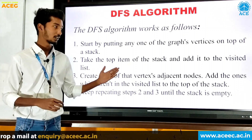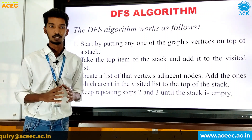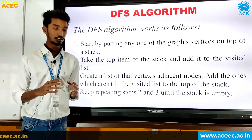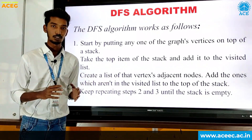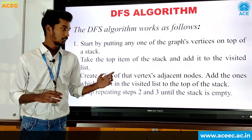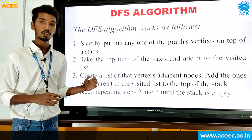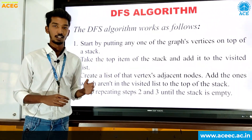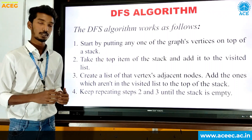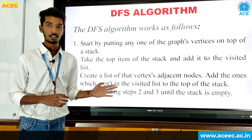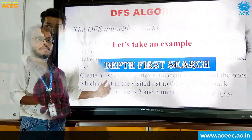Step 2: take the top item from the stack and add it to the visitor list. Step 3: create the list of vertex adjacent nodes and add the ones which aren't in the visitor list to the top of the stack. Step 4: repeat steps 2 and 3 until the stack is empty, and here we will reach the goal node.